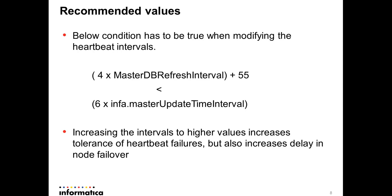For recommendations when increasing these values: whenever you increase master db refresh interval or info.masterupdate time interval, the following constraint must be met: (4 × master db refresh interval) + 55 < 6 × info.masterupdate time interval. This ensures that whenever there is a heartbeat failure or database update failure, the node recovers back into the domain without affecting other services.